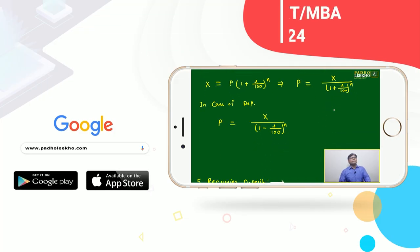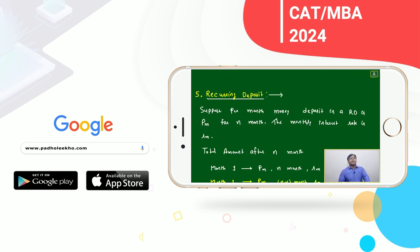If it is depreciation, you take it in negative terms. That much only. It is not a big thing. You already understood: X equal to P into 1 plus r by 100 to the power n. Take it this way - depreciation, take negative.